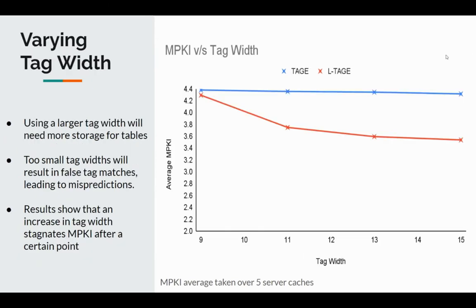When varying the tag width, we see that increasing tag width initially decreases MPKI and then it starts to stagnate. For very small tag sizes there are many mispredictions due to false tag matches, but after a certain point further increasing the tag width becomes redundant and mispredictions are not significantly affected.